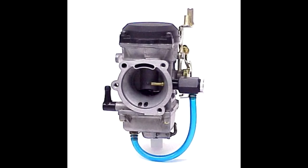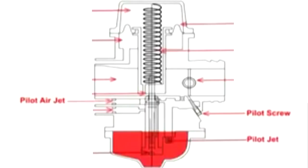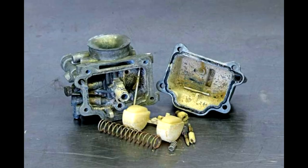The most common problem in the idle circuit is a blockage of either of these two passages. Clean fuel entering these passages — specifically the pilot jet or the pilot jet passage — is one of the number one causes of poor idle quality. The air jet or air passage can get blocked if you have a dirty air filter, but it's usually a fuel problem. The correction is simple: clean the passages, make sure they're free of dirt and debris, and use clean fresh fuel.